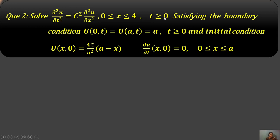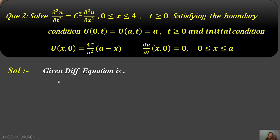The boundary conditions are: u(0, t) = 0 and u(a, t) = 0 for t > 0. The initial conditions are: u(x, 0) = (4ε/a²)·x·(a − x), and ∂u/∂t at (x, 0) = 0, for x in [0, a].